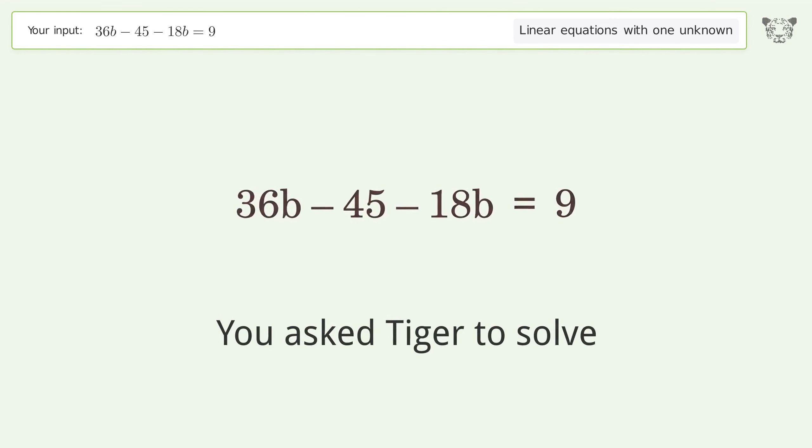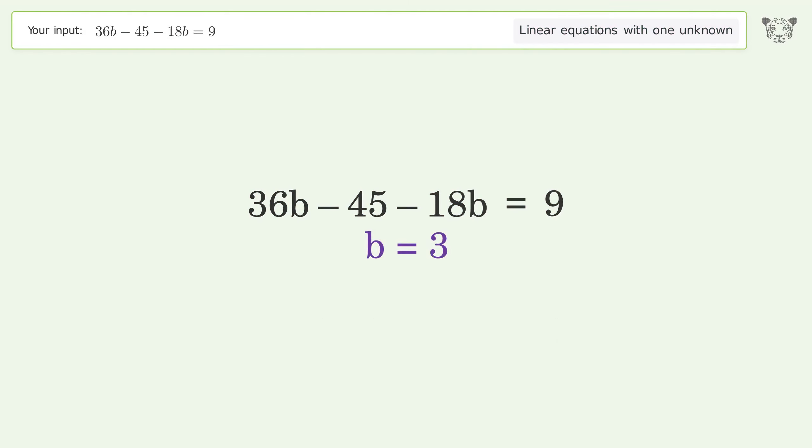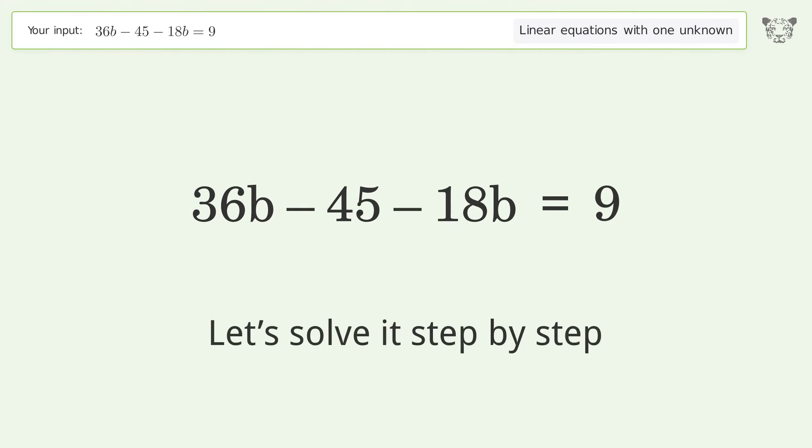You asked Tiger to solve this. It deals with linear equations with one unknown. The final result is b equals 3. Let's solve it step by step.